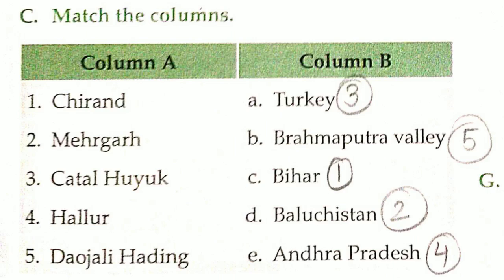Chirand is in Bihar. Chirand, Bihar. Mehrgarh, Baluchistan. Mehrgarh, Baluchistan. Catal Huyuk is in Turkey. Turkey. Hallur, Andhra Pradesh. Daojali Hading, Brahmaputra Valley. Okay, so series will be three, five, one, two, four.